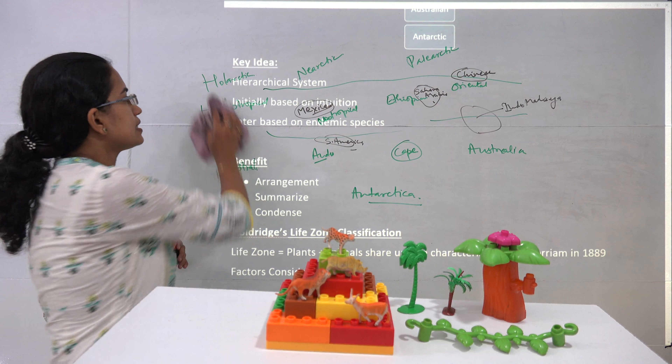Why is this classification beneficial? First of all it would help us give a proper structure to understand and know a kind of arrangement. It would help condense information and summarize the major facts. So the first classification we will discuss today is Holdridge's life zone classification. Holdridge talked about the concept of life zone, which was first given by Merriam in 1889. Merriam explained that a life zone is a region where plants and animals share unique characteristics.